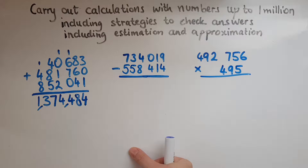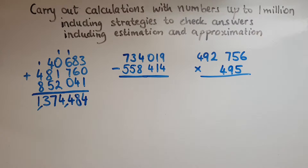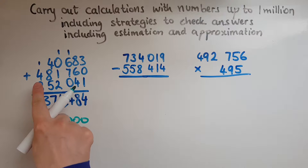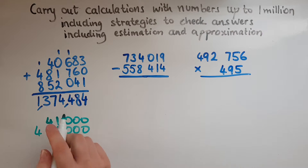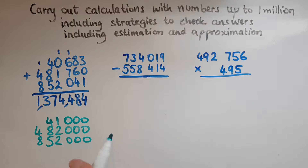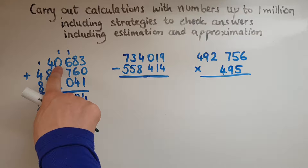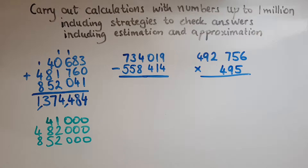We could repeat the calculation but we could also use estimation and approximation. So if I round these to the nearest thousand: the first one is 41,000, the second number is 482,000, and the third number is 852,000. The way we round them is by looking at the digits next to them. So that's a zero, but this is a six, so that's going to round up to one. And that's a seven, so it's going to round up to two. That's a zero, so there is no change.